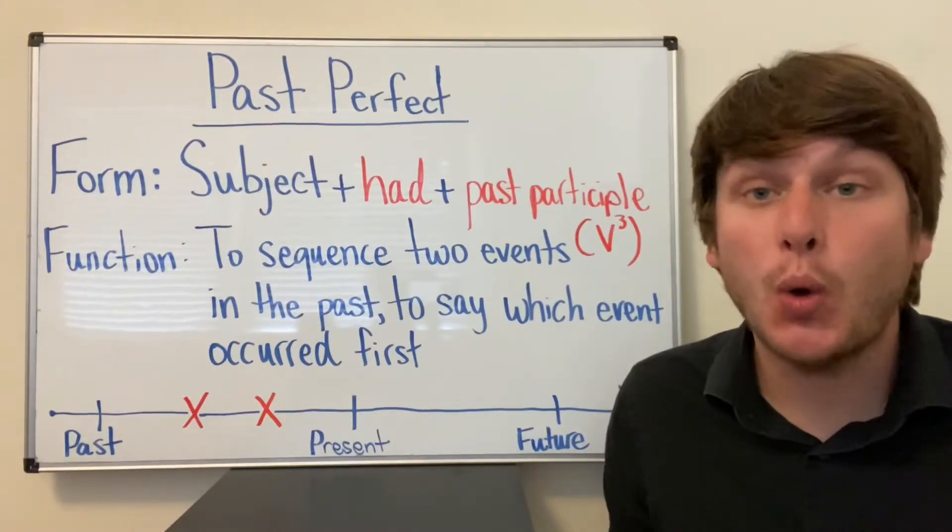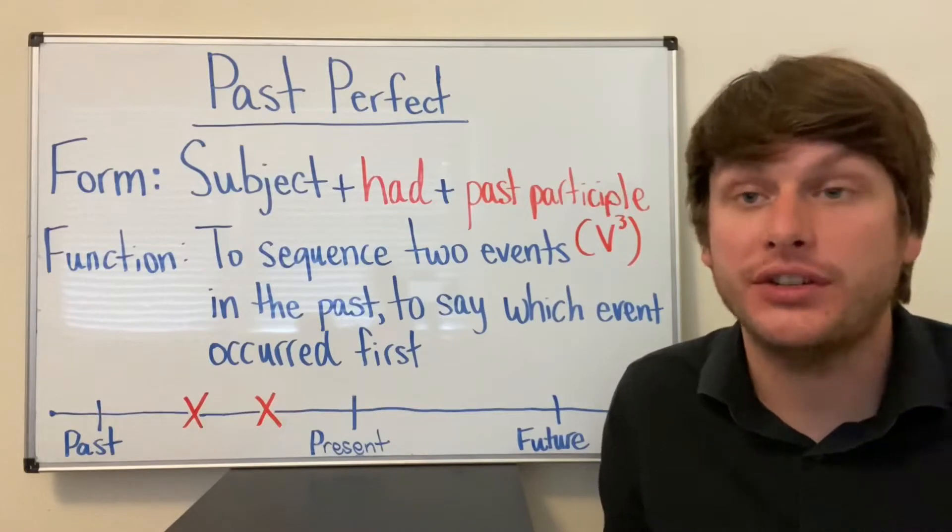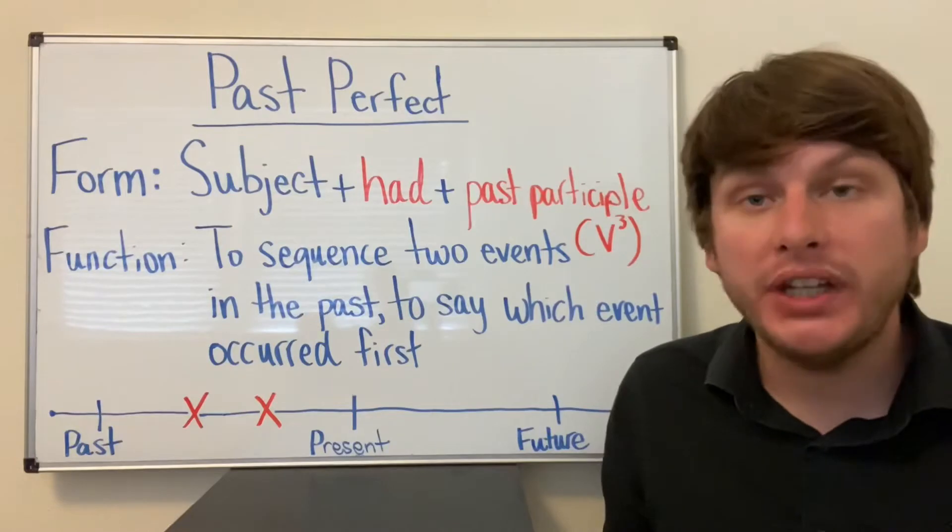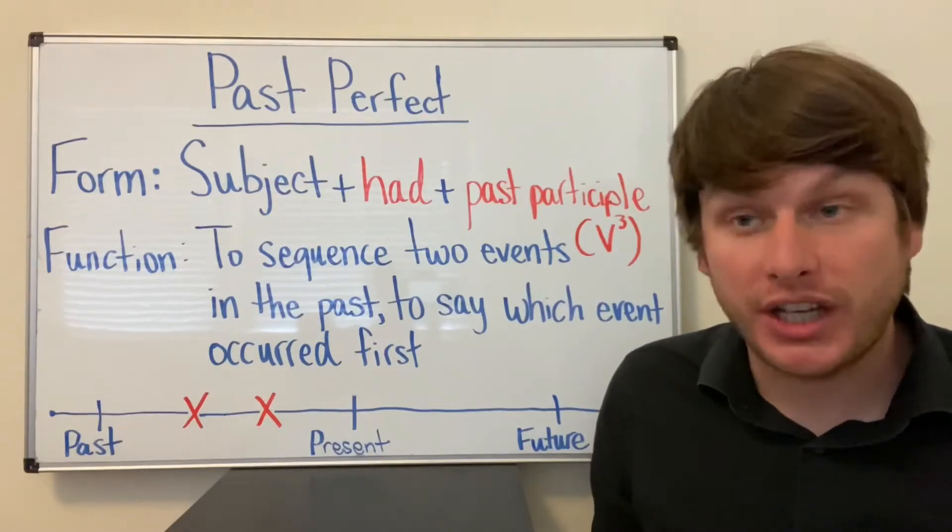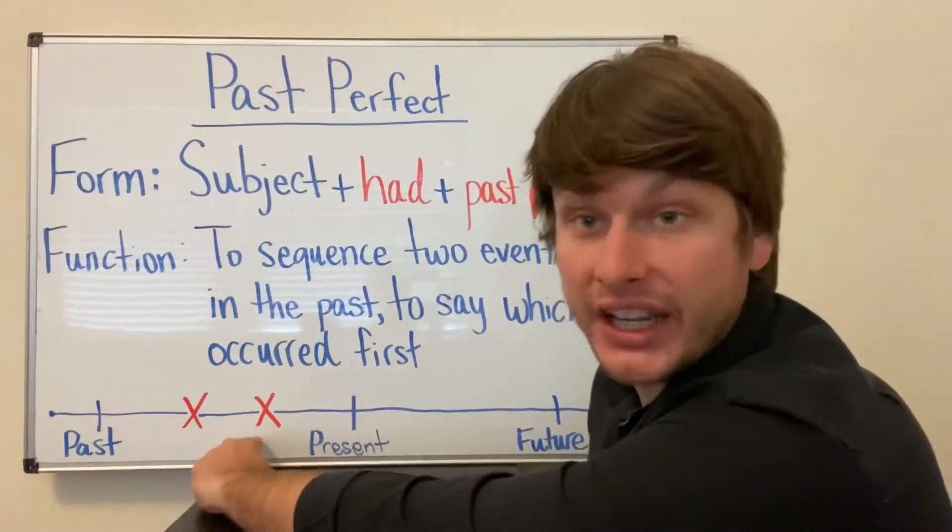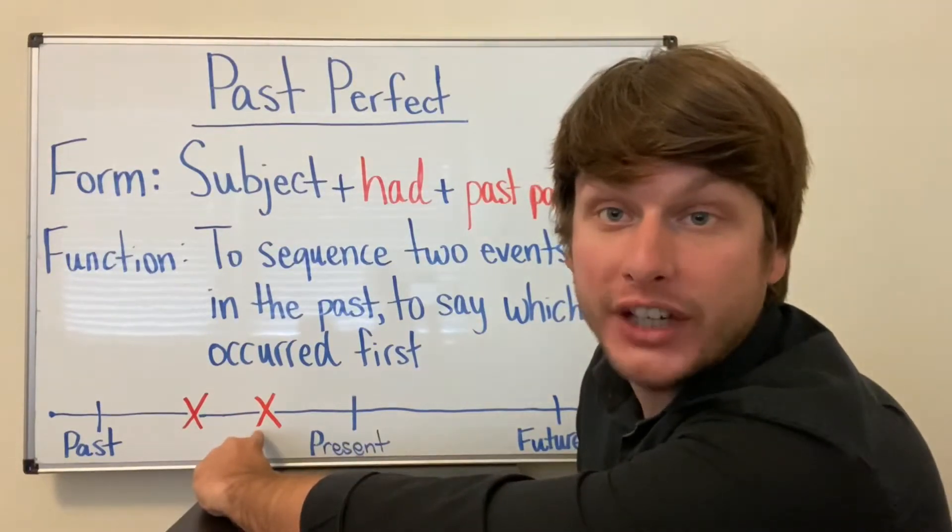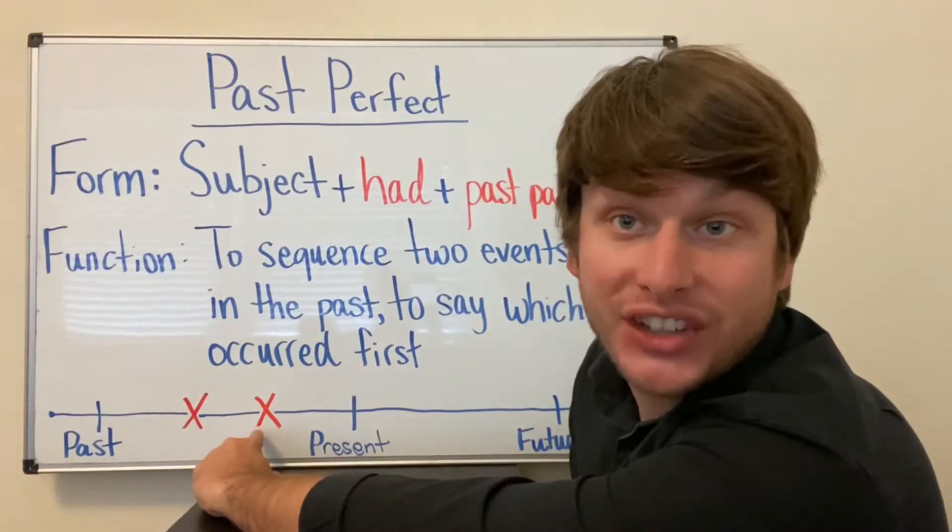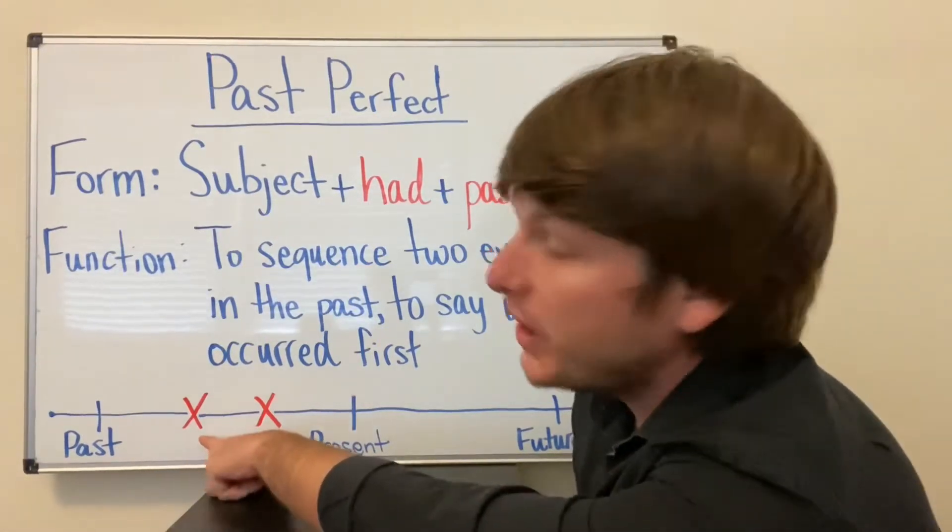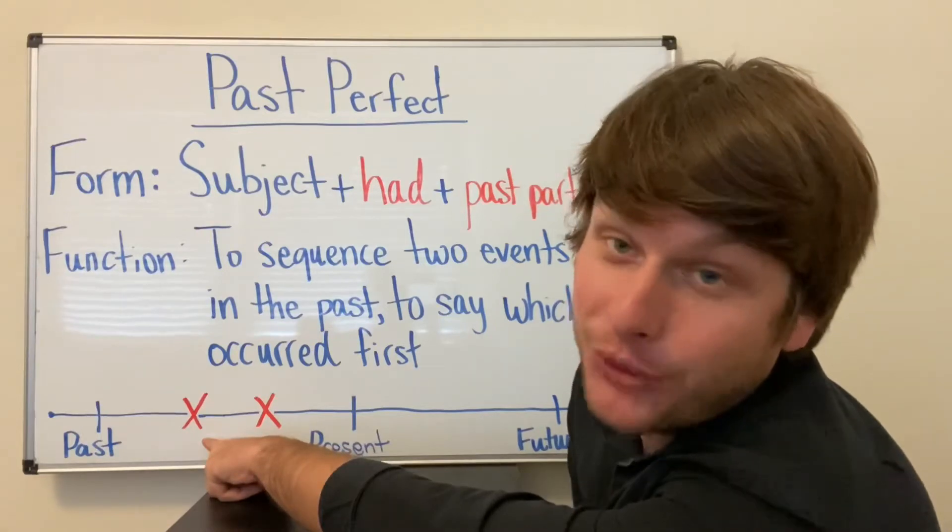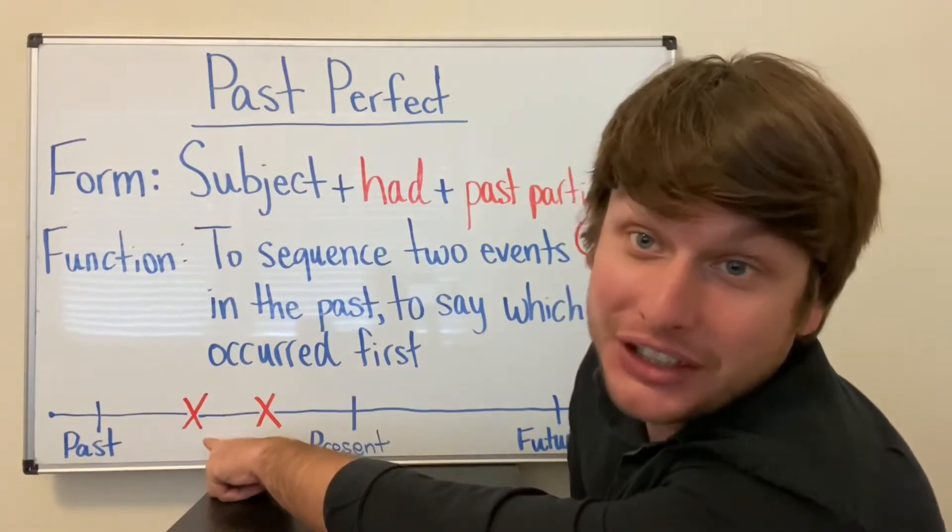It's so important to understand why we use this grammar. We are mentioning two events in the past. And the Past Perfect shows us and tells us which one happened first, which one happened before the other event.